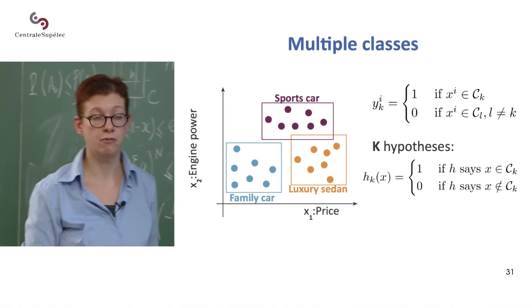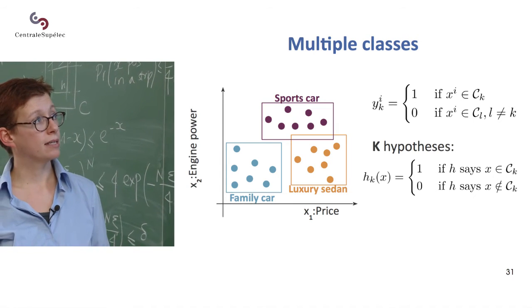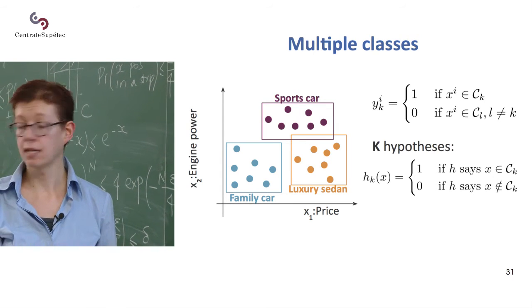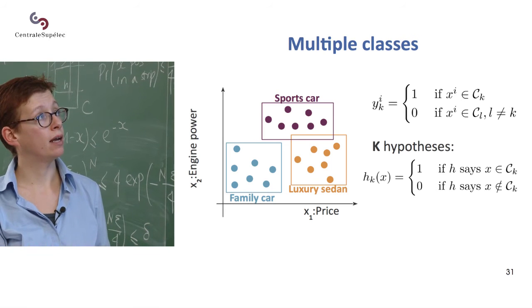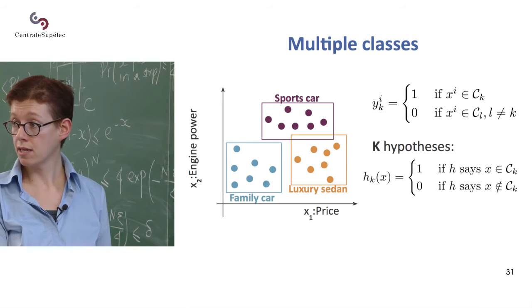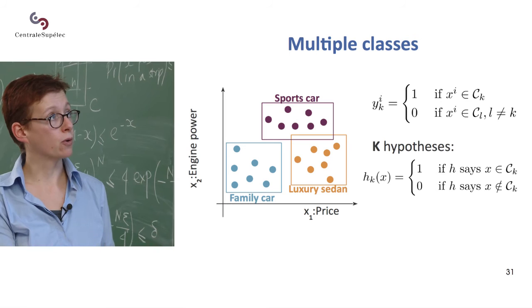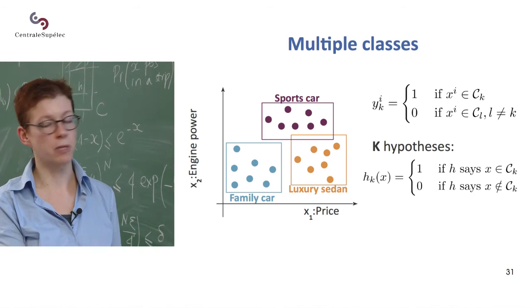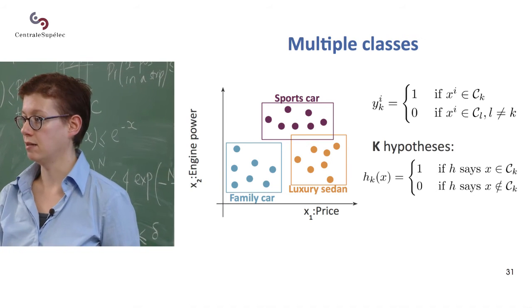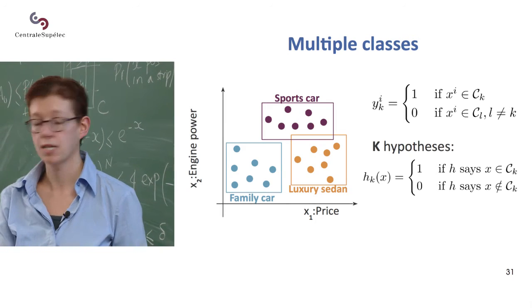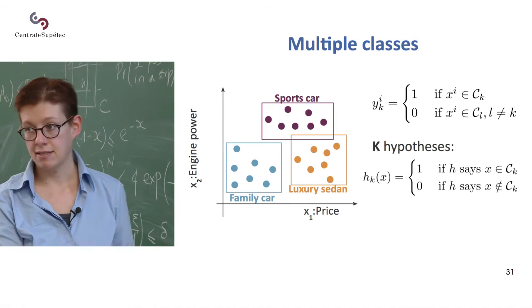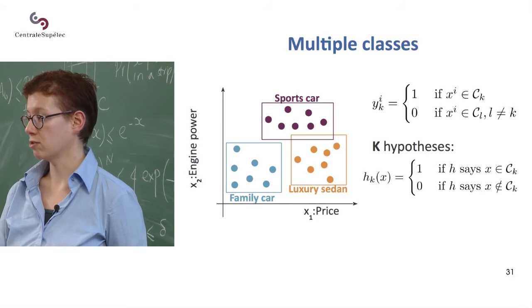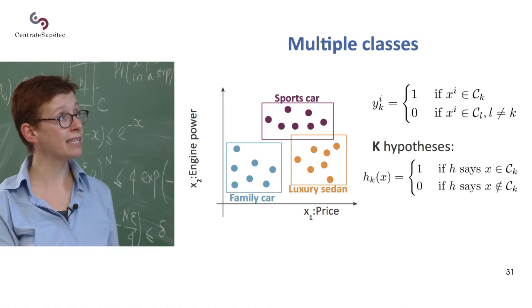So more formally, we have k classes. So here k equals three. And then we have k labels. So remember, the exponent indicates which training example we're talking about. And now we have an index that tells about which class we're talking about. And then now y is binary.